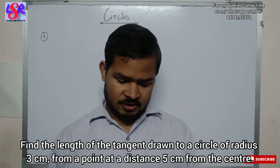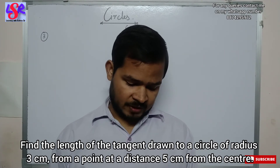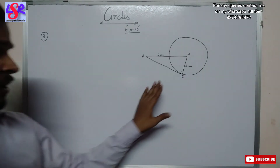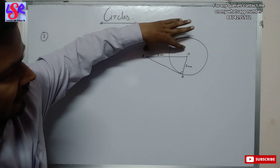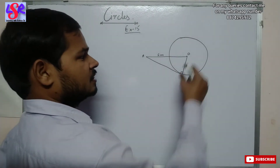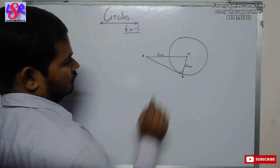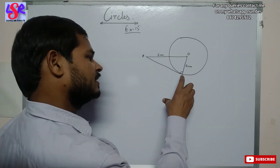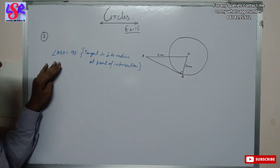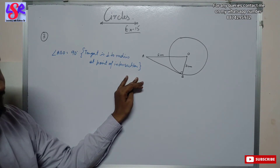Now let us do question number 3. We have to find the length of the tangent drawn to a circle of radius 3 cm from a point at a distance of 5 cm from the center. We have point A which is 5 cm from the center and the radius OB is 3 cm. Since the tangent is perpendicular to the radius, angle ABO equals 90 degrees at the point of intersection, making this a right-angled triangle.